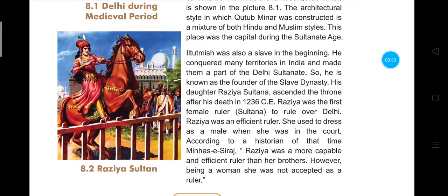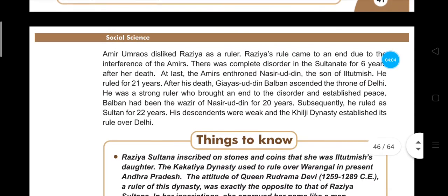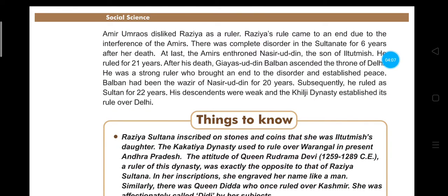Rajya was an efficient ruler who dressed as a male. According to the historian of that time, Minhas Isiraz, Rajya was more capable and efficient than her brothers. However, being a woman, she was not accepted as a ruler and many ministers were conspiring against her. The Ameers and Umraoz in her court disliked a female ruling them.